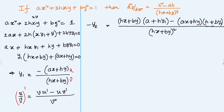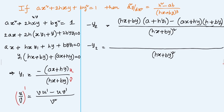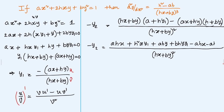Expanding the numerator: (hx + by)(a + hy₁) - (ax + hy)(h + by₁). This gives: ahx + h²x·y₁ + aby + bhy·y₁ - abx·y₁ - ax·by₁ - h²y - bhy·y₁. All over (hx + by)².